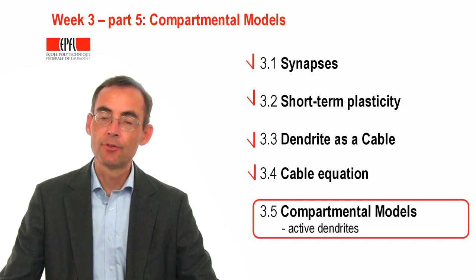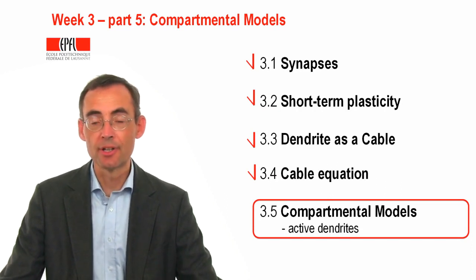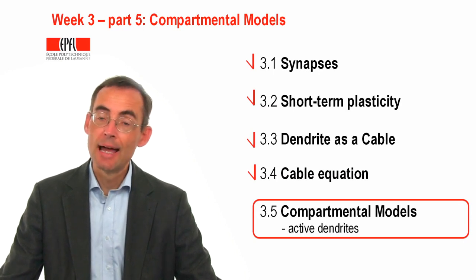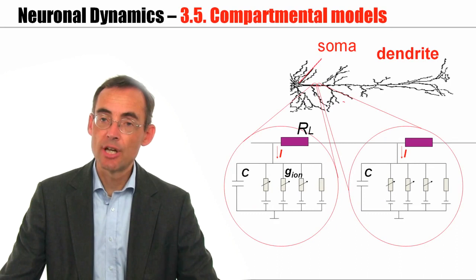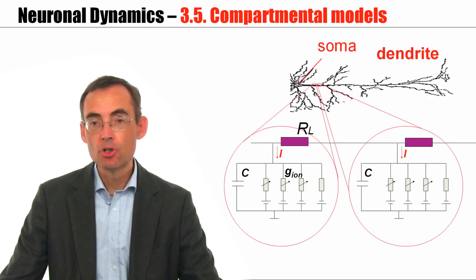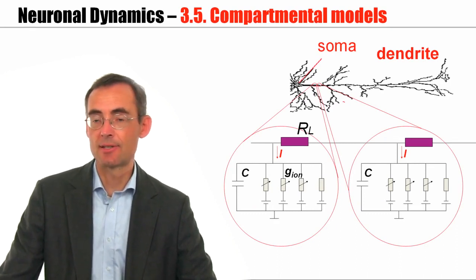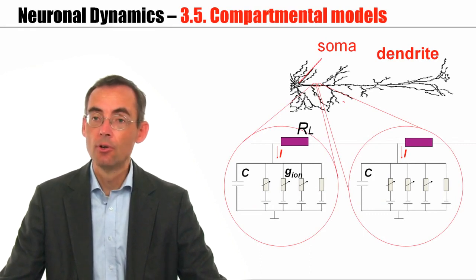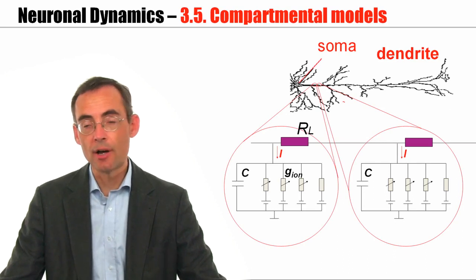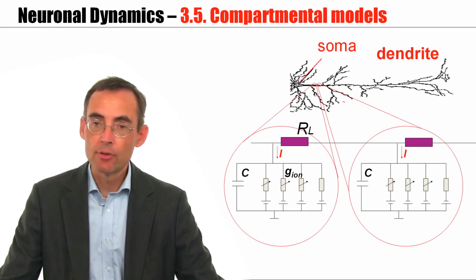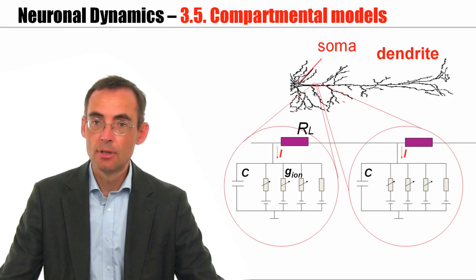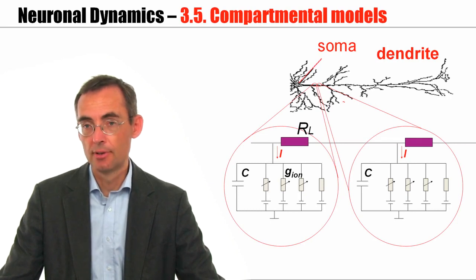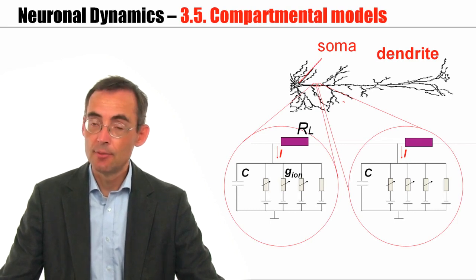Welcome to the final part of the third week of the class Neuronal Dynamics. In the previous two parts, we started off with a segmented dendrite, and then we took the continuum limit. We said the segment size gets smaller and smaller, and finally we arrived at a partial differential equation, which could include all sorts of ion channels. However, for practical analytical solution, most often we have to go back to passive dendrites, and that's what we did in part four.